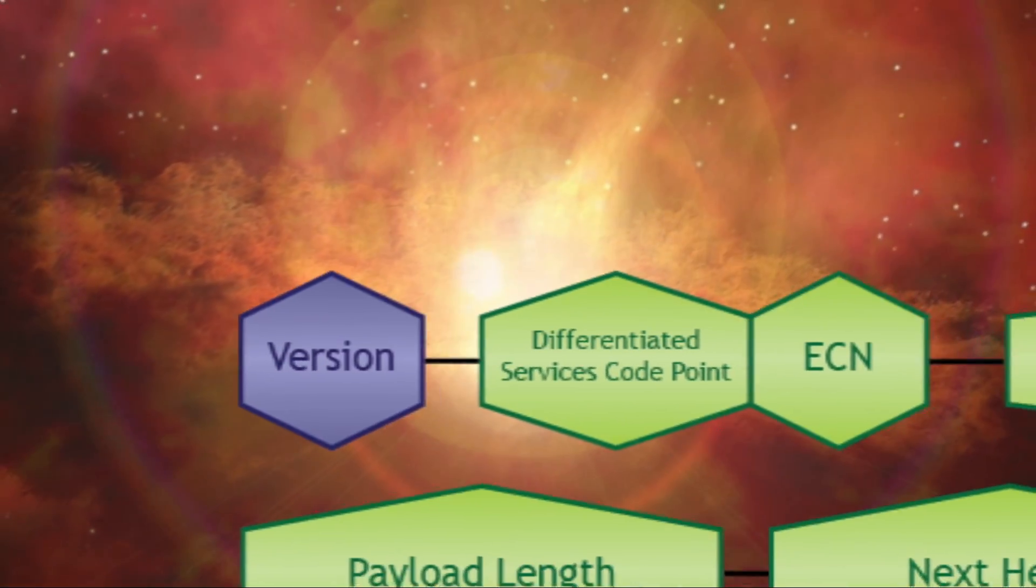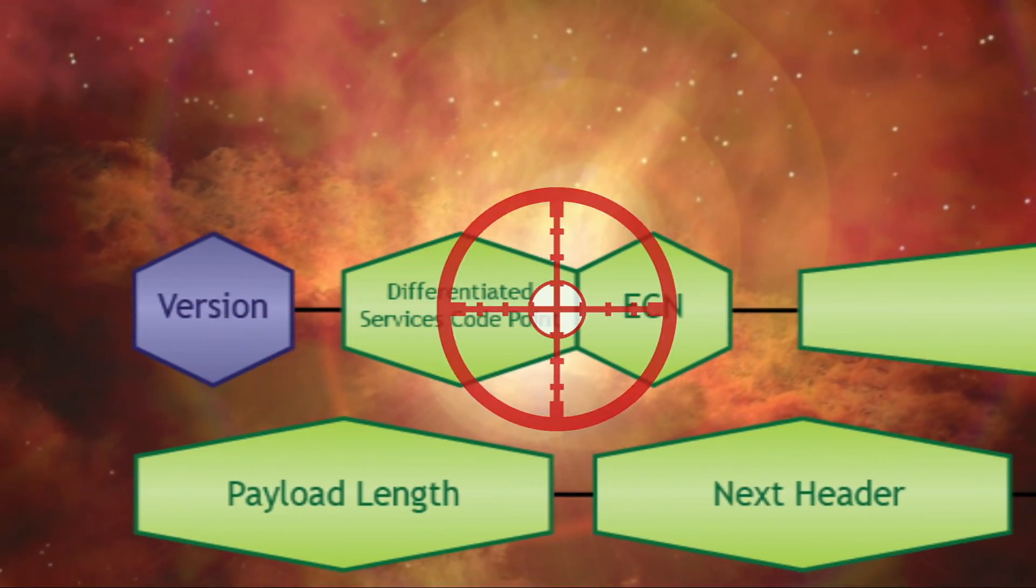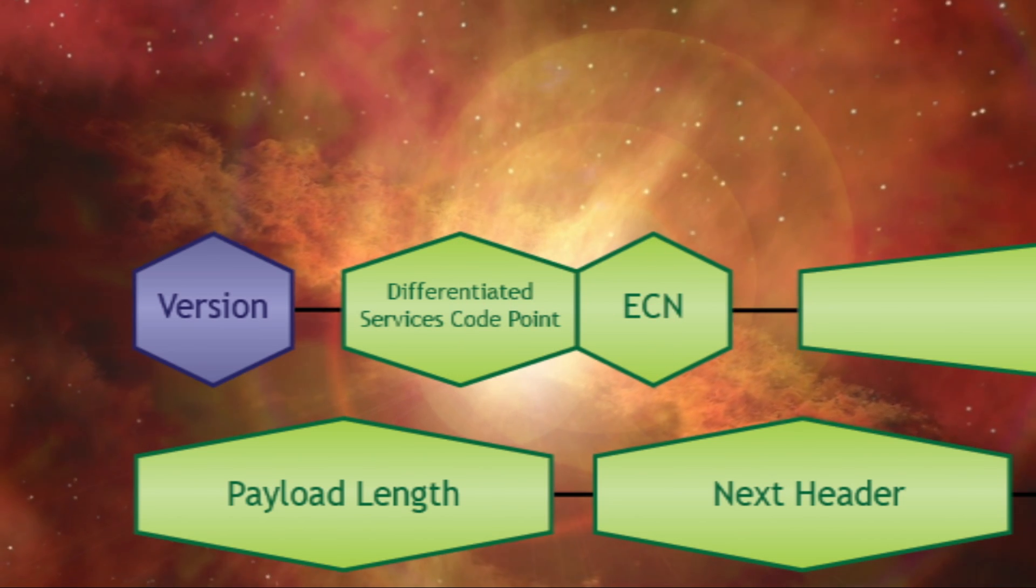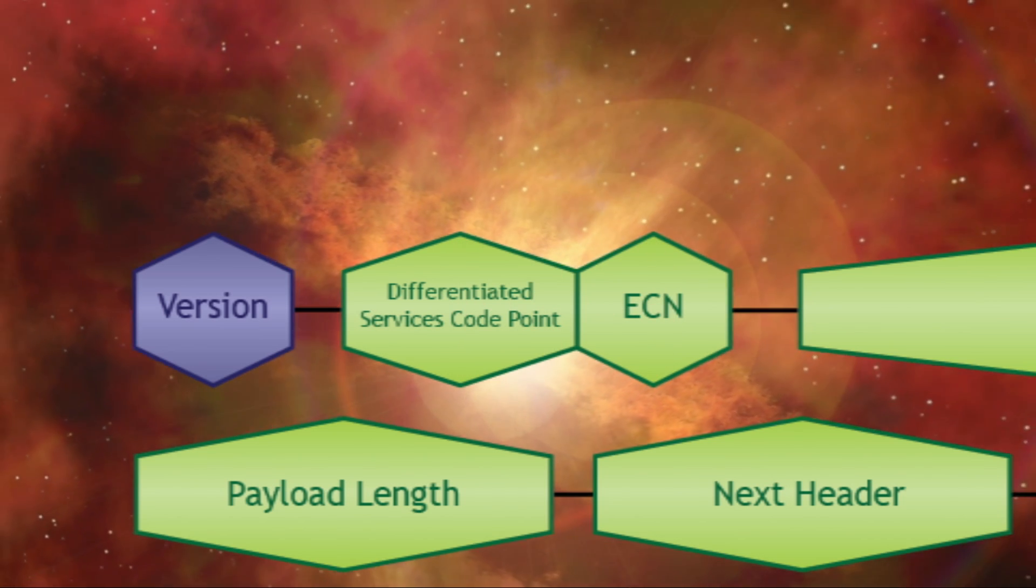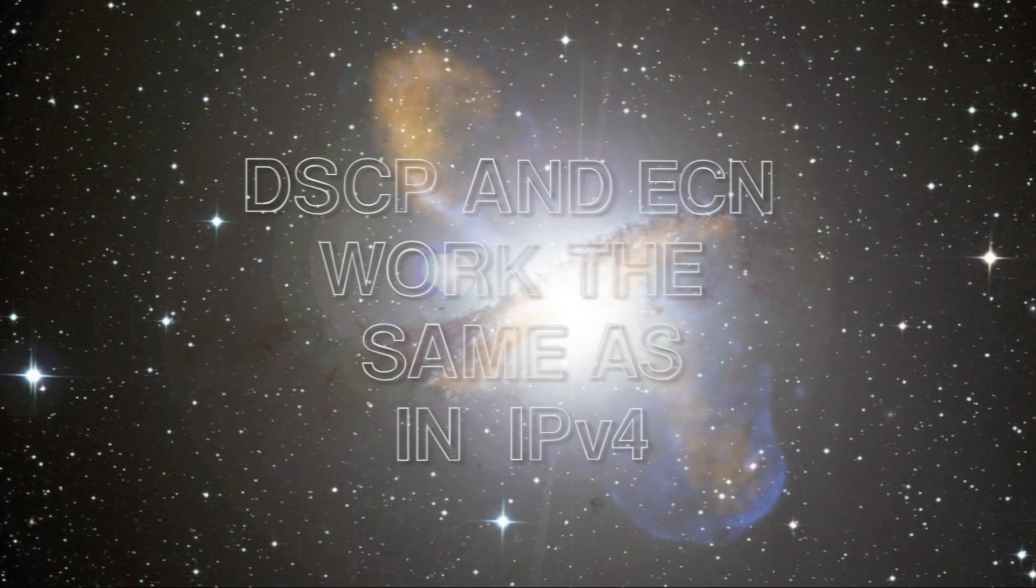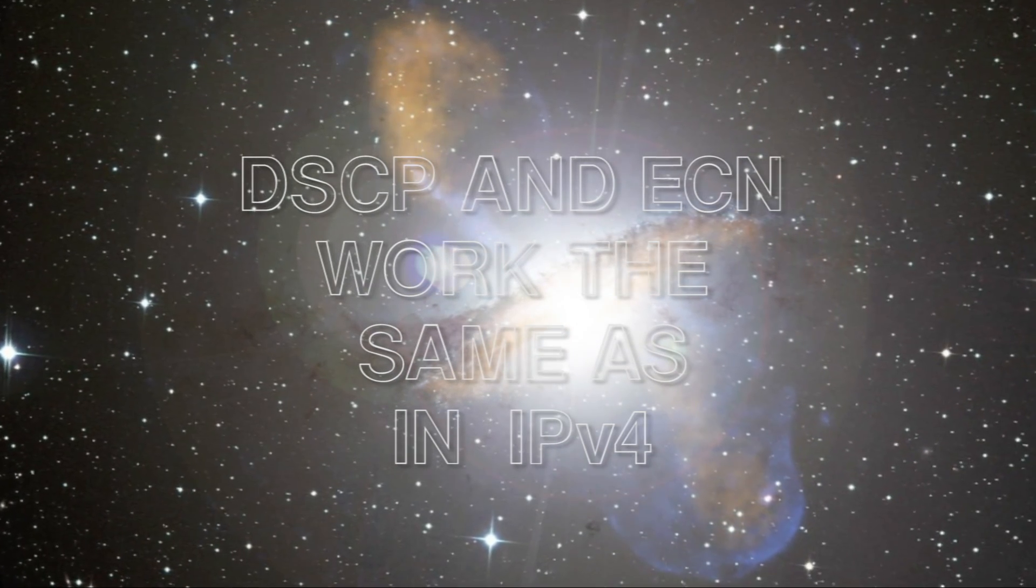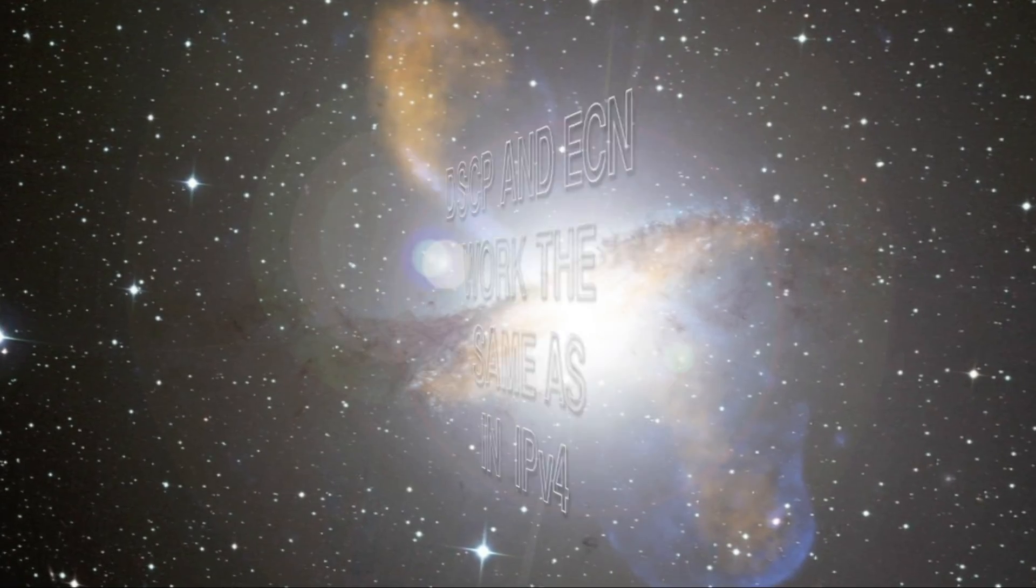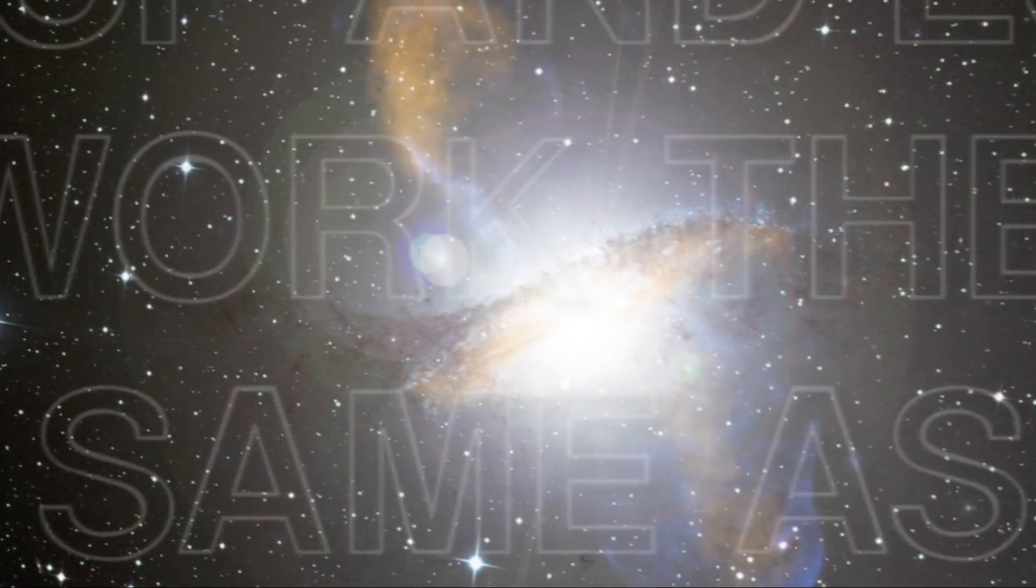Type of service field. The differentiated services code point is the next 6 bits, and the explicit congestion notification is the next 2 after that. The differentiated services code point uses exactly the same codes as IPv4 to classify different types of packets, and the ECN likewise works exactly the same way.